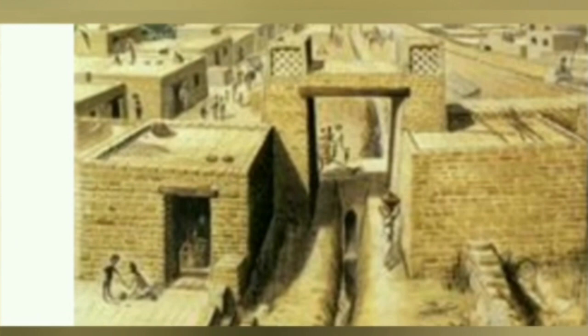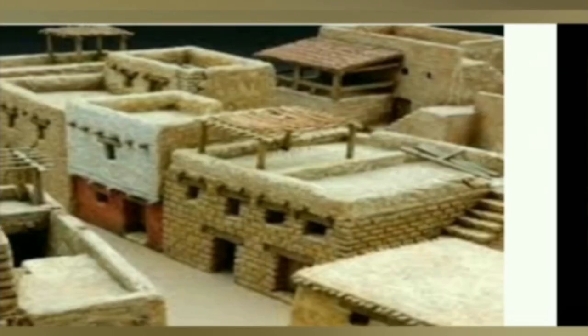The houses of the common people were generally one or two storeys high. Rooms were built around a courtyard. The houses were separated by narrow but straight lanes. They were made of baked bricks of uniform size and good quality.